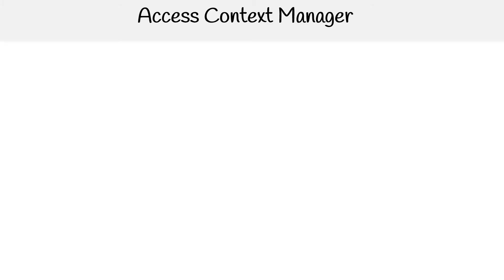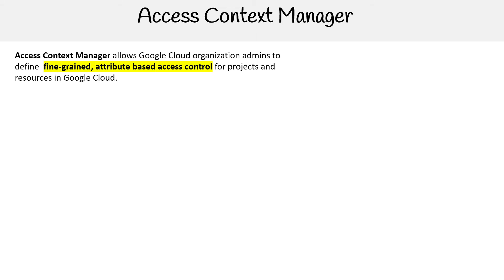Hey, this is Andrew Brown from ExamPro. We're going to be looking at a few services here that are identity, but I put them in the security section to kind of group them close to BeyondCorp. The first is Access Context Manager, which allows Google Cloud organizations admins to define fine-grained, attribute-based access controls for projects and resources in Google Cloud.